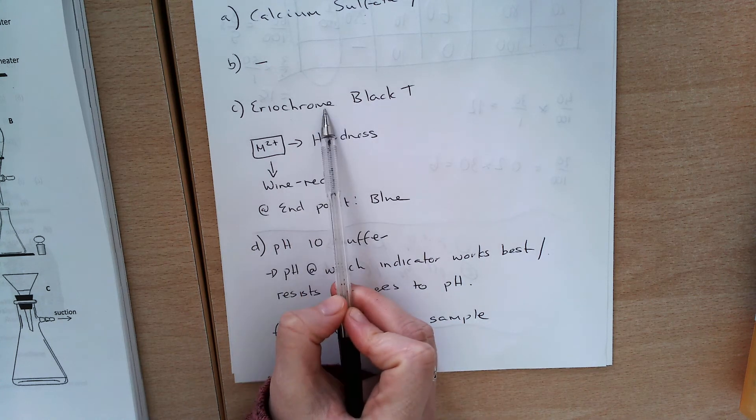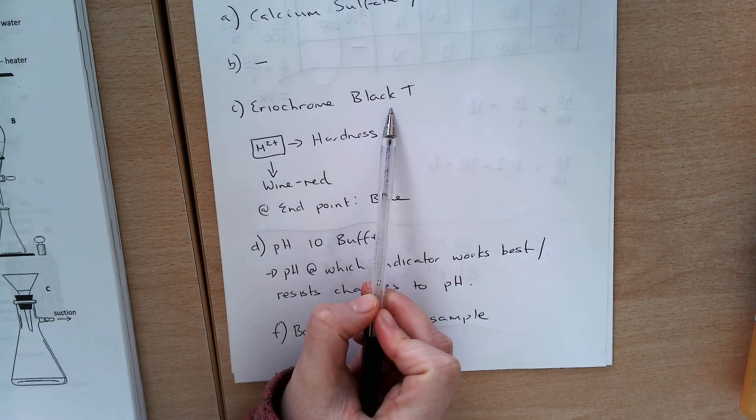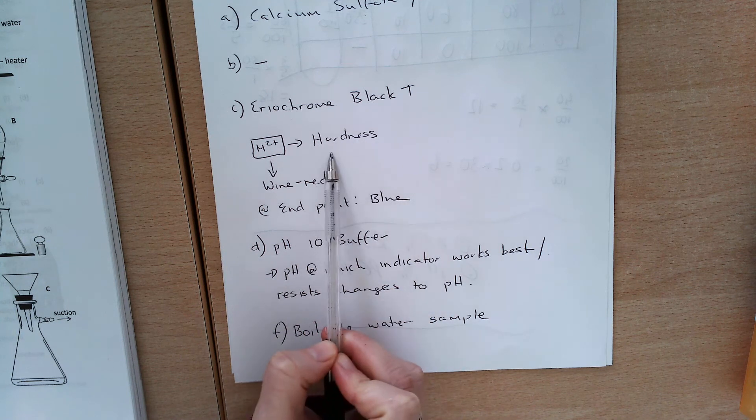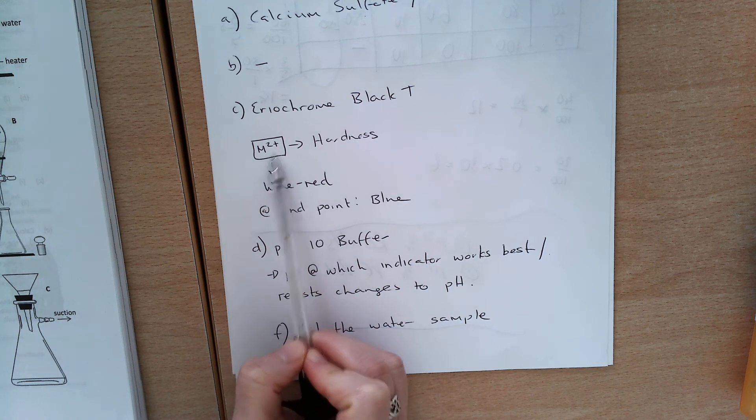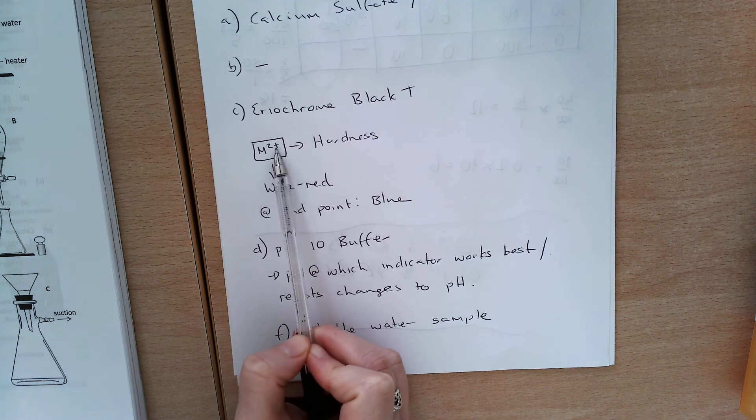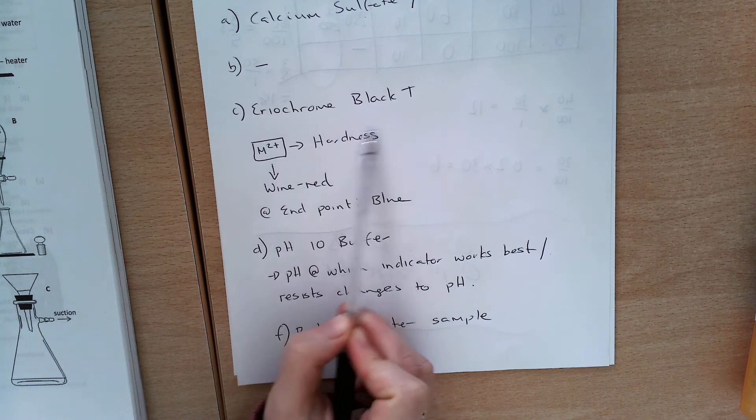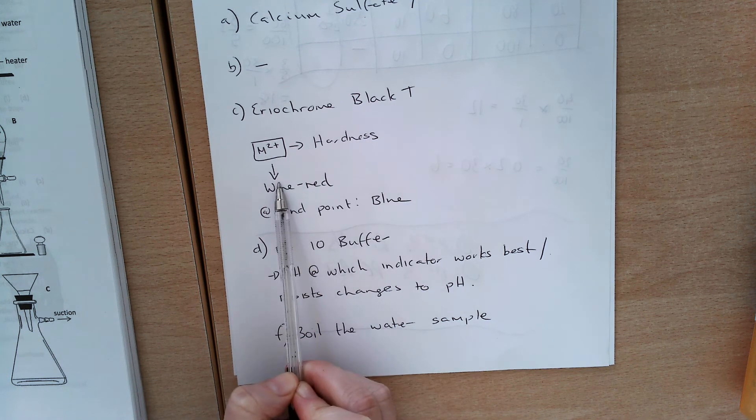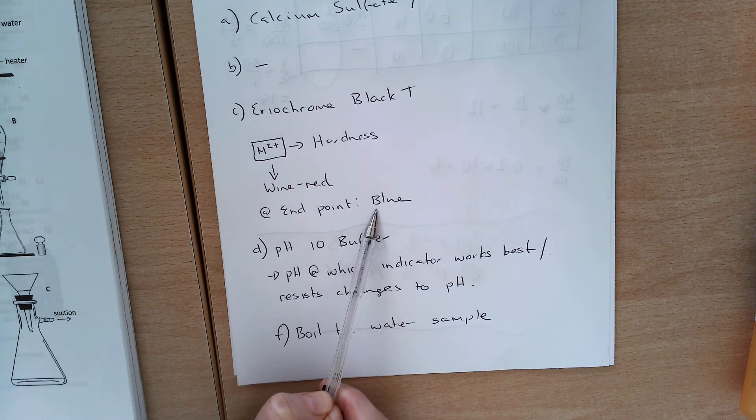Next here, you're asked for a name of the indicator added to the conical flask. We have Eriochrome Black T. Then you're asked what color was observed using this indicator in the presence of M²⁺. The M²⁺ is our calcium ions that cause the hardness, so it's wine red. And then at the end point, it changes to blue.